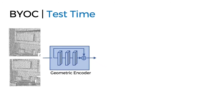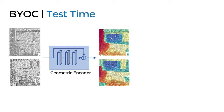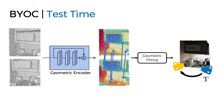At test time, we only keep the geometric encoder, which allows us to operate directly on any point cloud. Similar to training time, we generate point-wise geometric features for each point cloud, estimate correspondences, and then register the scene by estimating the transformation that best aligns the correspondences.